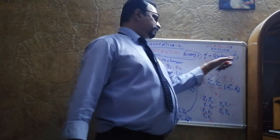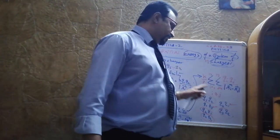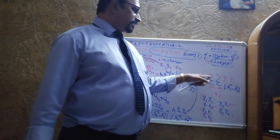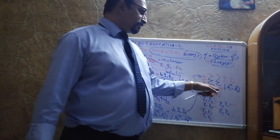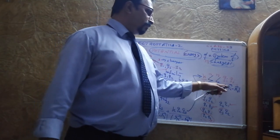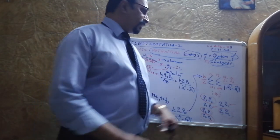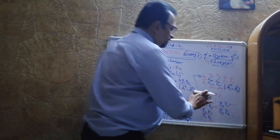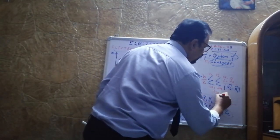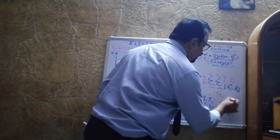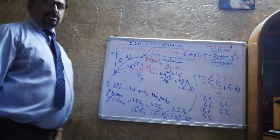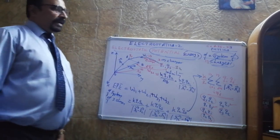The electrostatic potential energy of a system of n charges is equal to (k/2) Σᵢ₌₁ⁿ Σⱼ₌₁ⁿ qᵢqⱼ / |rᵢ − rⱼ|, where i ≠ j. This is the final expression for potential energy of a system of n charges. Thank you.